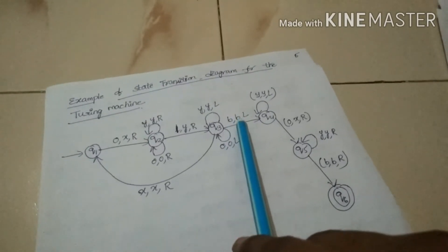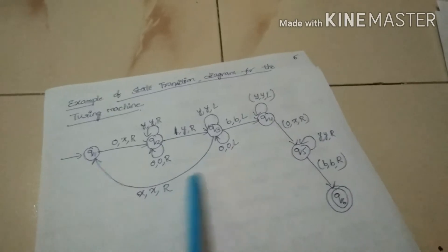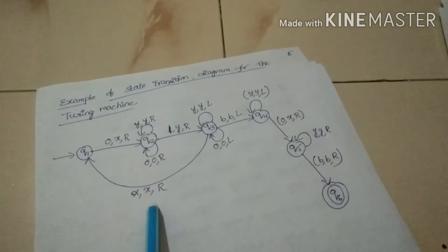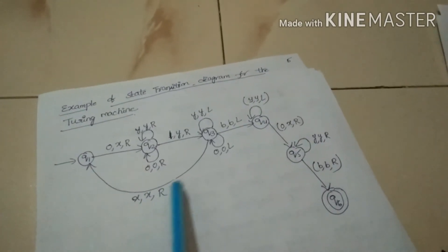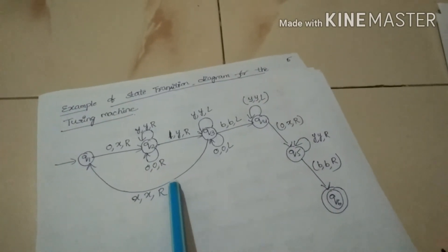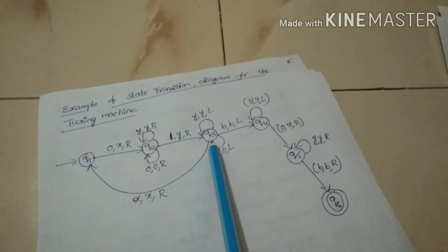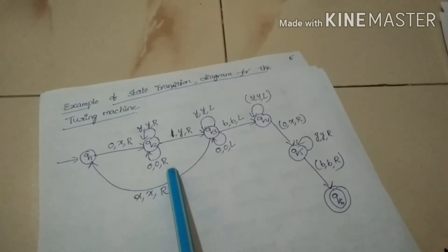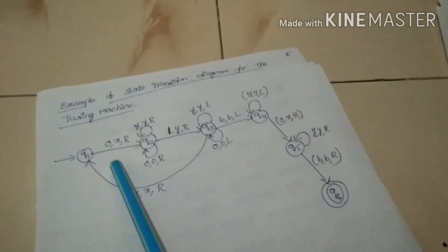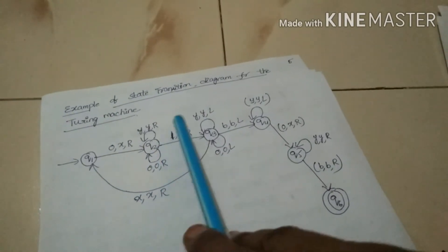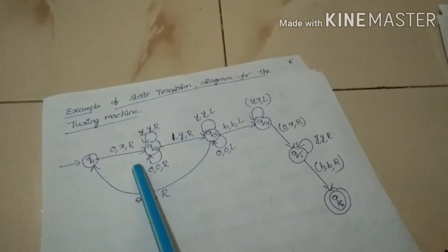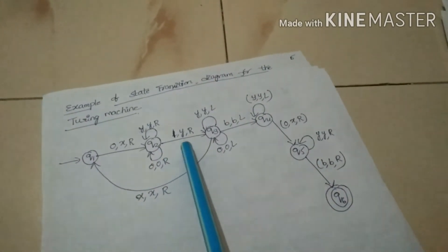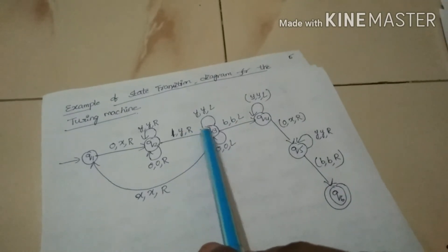The head position can be moved to the left direction and the machine is in state Q3. The loop at state Q3 labeled (0, 0, L) will shift the head further in the left direction. There is a directed edge from state Q3 to Q1 with label (X, X, R) in the state transition diagram. The direct edge from Q1 to Q2 with label (0, X, R) will transit the Turing machine from state Q1 to Q2, moving the head position to the right direction and replacing the current cell value with X.